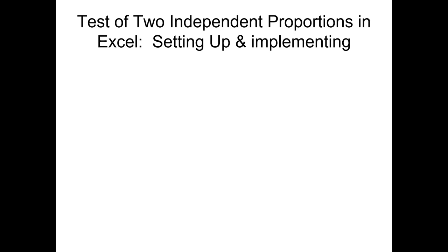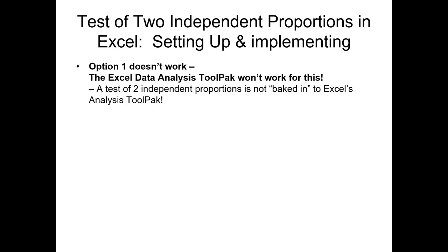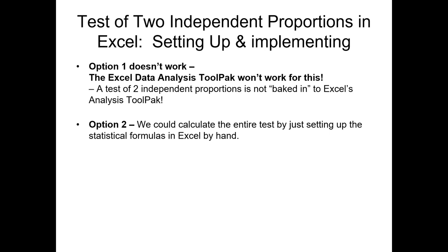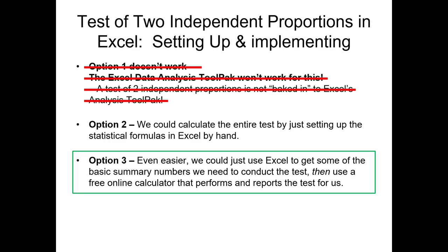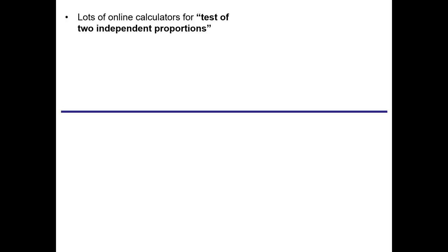Now that we clearly understand our hypothesis and the variables we want to use, let's implement this using Microsoft Excel. There are a few options: option one, using the data analysis tool pack, is not going to work for us. We could calculate the entire test by hand using formulas in Excel, but we won't do that either. Instead, we'll use Excel to get the basic summary numbers we need, then use a simple free online calculator to perform and report the test. I highly recommend the specific calculator shown in this video — a link is provided nearby.